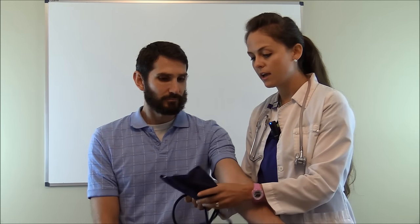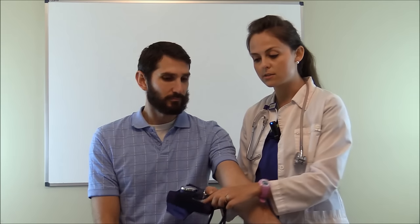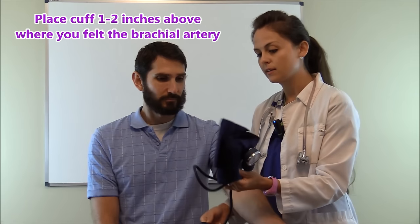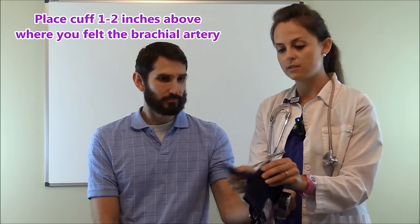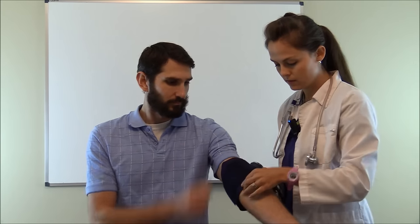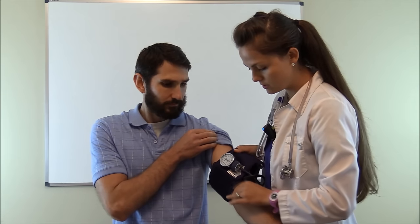We feel about right here because on your blood pressure cuff you have these little arrows and it says left arm right arm. This is his left arm so we're going to make sure that we put this arrow about one to two inches above that artery. So let's slide it up and make sure our cuff fits properly so we're putting that arrow about one to two inches above where I felt the brachial artery.